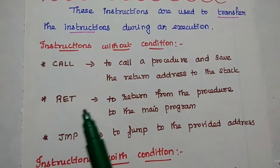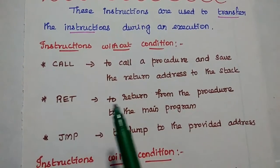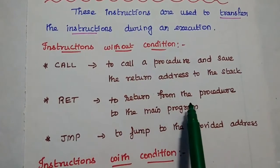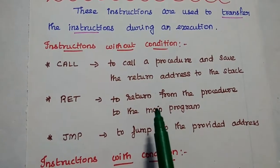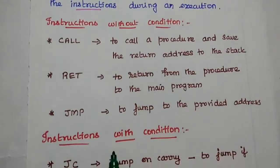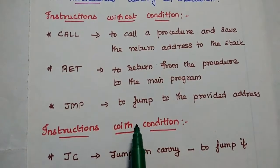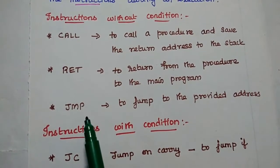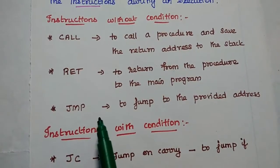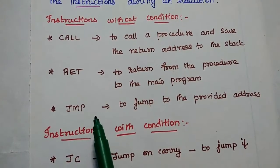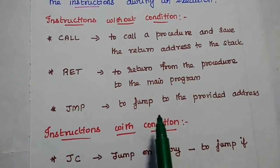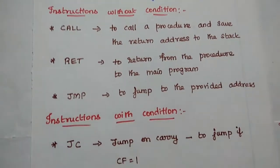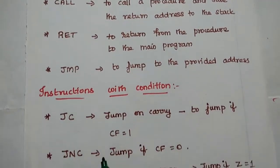RET is the return address instruction — used to return from a procedure back to the main program of the microprocessor. JMP is the jump instruction — without any condition, we can simply jump to the given address from the main program.